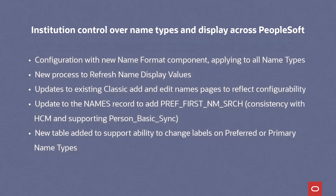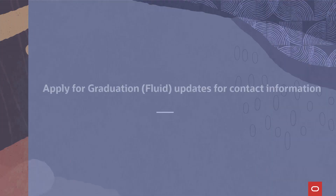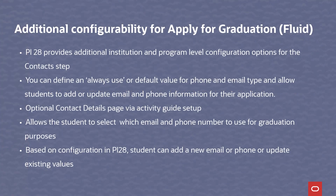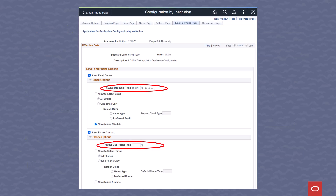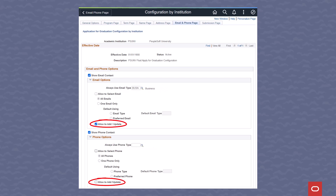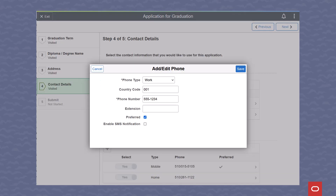For Update Image 29, we're planning to provide this configuration to Fluid Name Pages. We've continued our enhancements to the Apply for Graduation Fluid redesign. This update provides additional institution and program level configuration options for the context step. You can define an always use or default value for phone and email type and allow students to add or update email and phone information for their application.